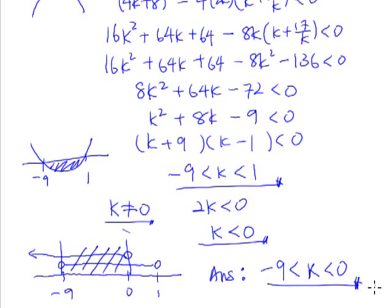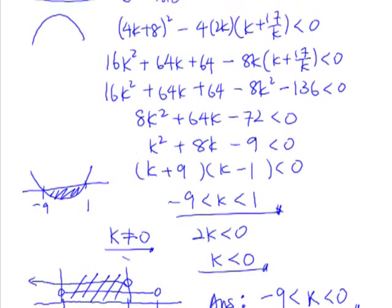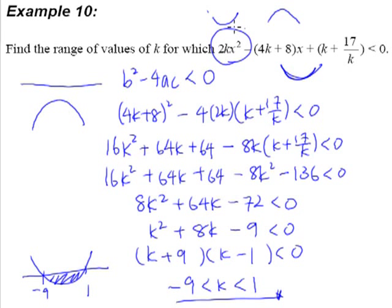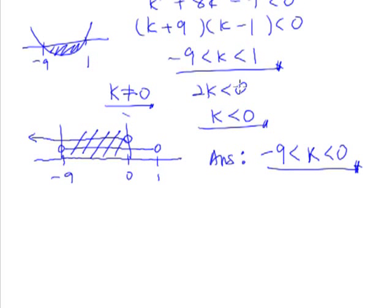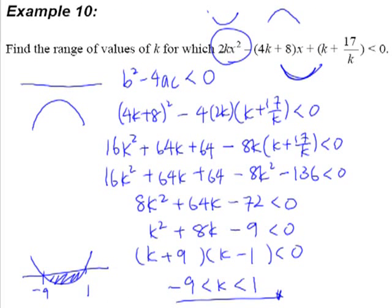Do take note of questions like this, especially when you see the coefficient of x² involving your unknown k. Because first of all, like in this question, we have to first make sure that this quadratic curve is a maximum curve. Our 2k has to be less than zero in order to make it a maximum curve. Next, because it is a maximum curve that is always underneath the x-axis, our discriminant will be less than zero. And that is when we come up with the second condition that our k has to fulfill.